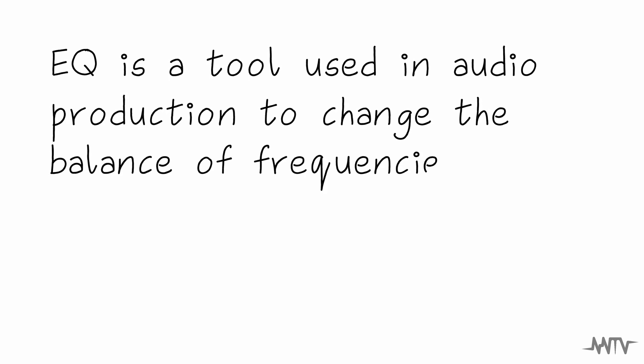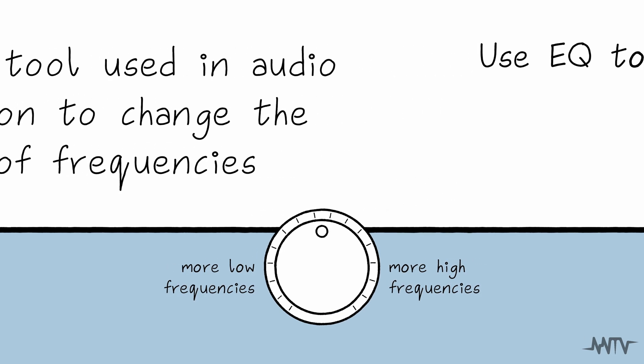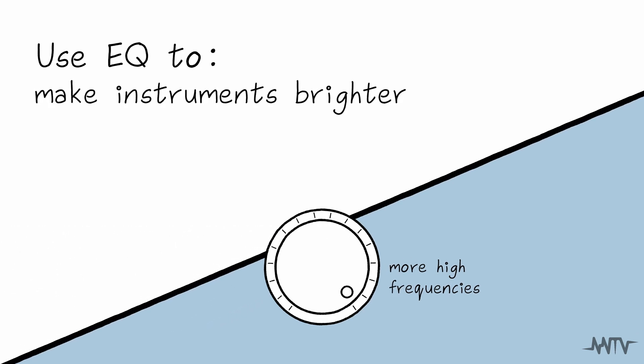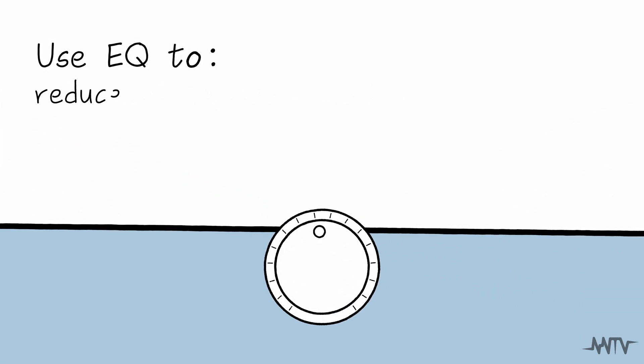EQ is a tool used in audio production to change the balance of frequencies in a given signal. One might want to change the balance of frequencies for a number of reasons, including altering a sound or instrument's character or tonality to make it sound brighter or darker, or reducing unwanted elements like hiss or rumble.